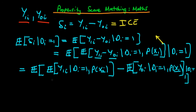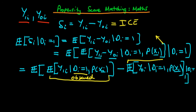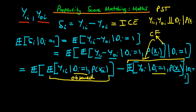The first expression is something which is observed because these individuals actually choose treatment and hence we observe y1i. The second expression looks counterfactual — for individuals who chose di equal to 1, what would their outcome have been had they not chosen treatment? But the propensity score theorem tells us that y1i and y0i are conditionally independent of di when we condition on the propensity score. So it doesn't matter which value of di we use in the second expression — we can change di to equal 0.